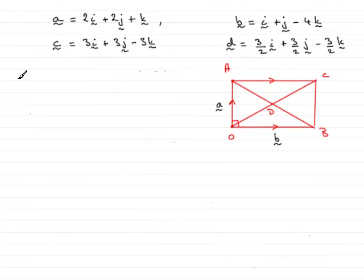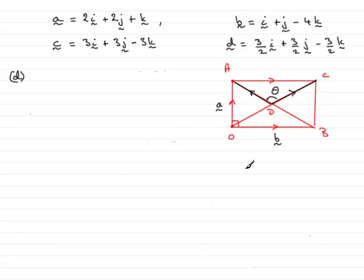Now in part D, we've got to find the angle ADC. I'm going to mark that in as theta. When you need to find the angle between two vectors, it's important that you always use the vectors that come away from the angle. Because what I'm going to use is a formula — the scalar product formula.